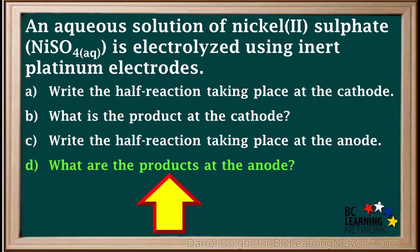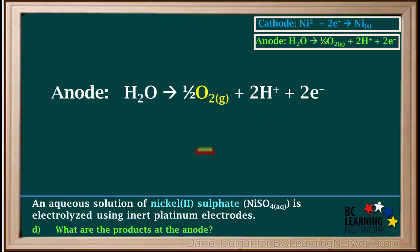Question D asks for the products at the anode. One of the products at the anode is oxygen gas, which we would observe as bubbles forming on the platinum electrode. The other product is H+ ions, which would form in the solution surrounding the platinum anode. So now we've answered question D.